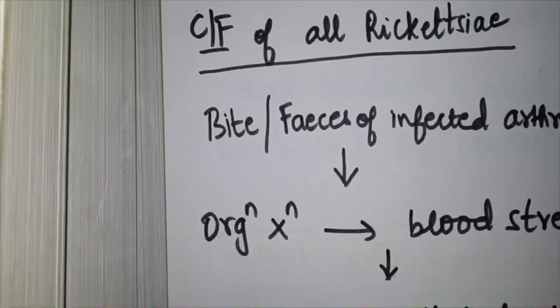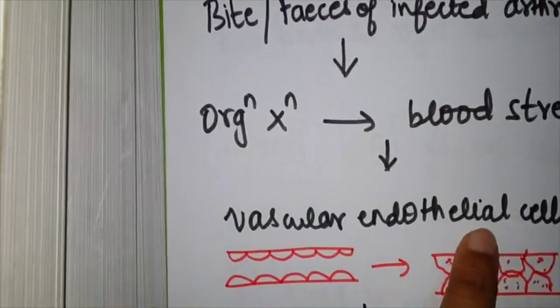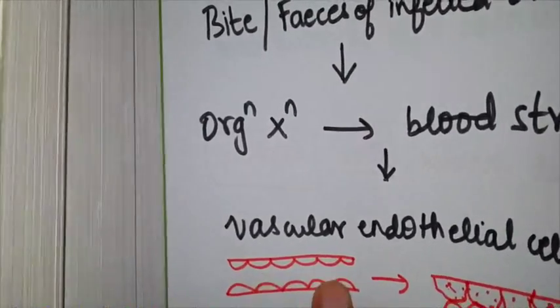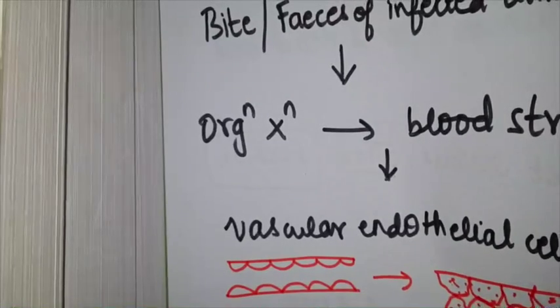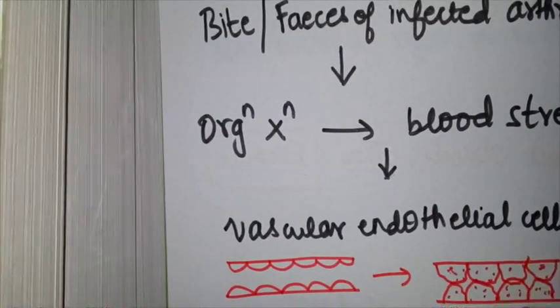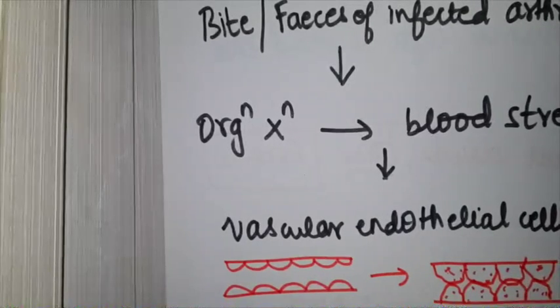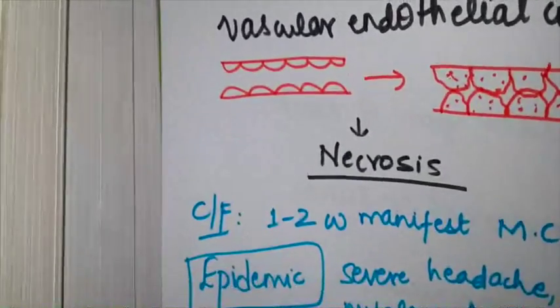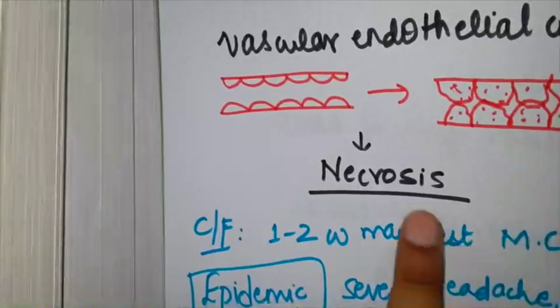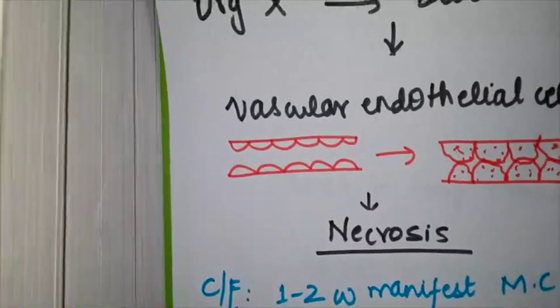After entering the bloodstream at the site of entry, it particularly prefers the vascular endothelial cells. These organisms enter, multiply, enlarge, and degenerate the cells, causing thrombosis of vessels and later leading to rupture and necrosis in the area. This is a common feature for all Rickettsia.